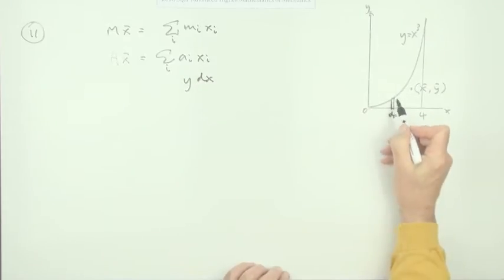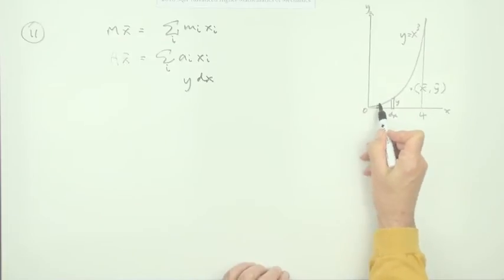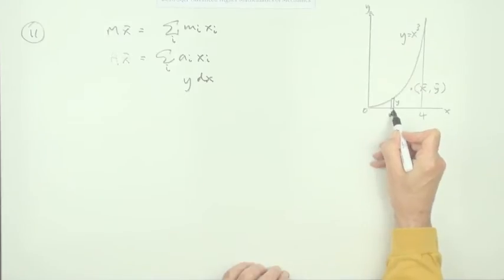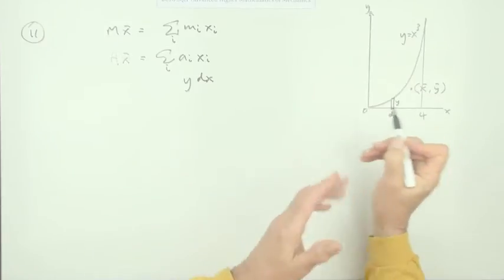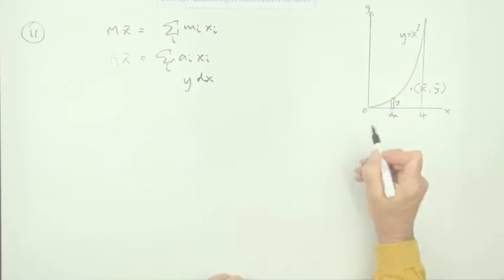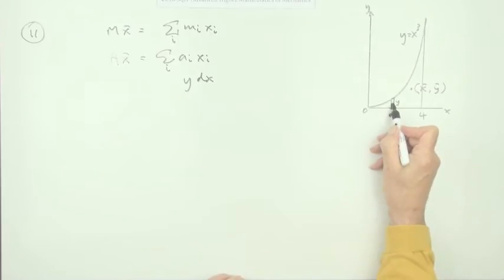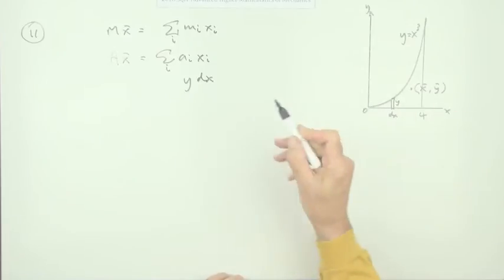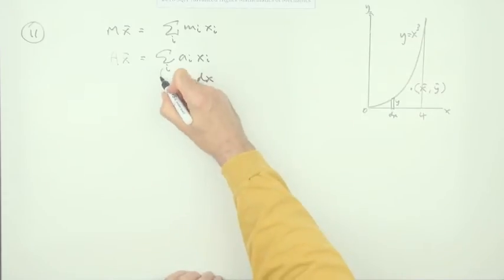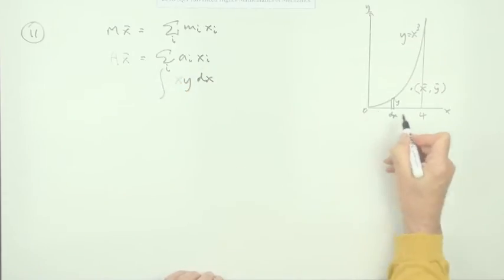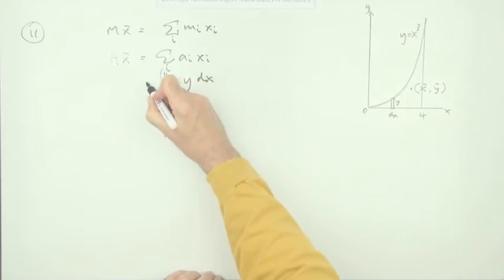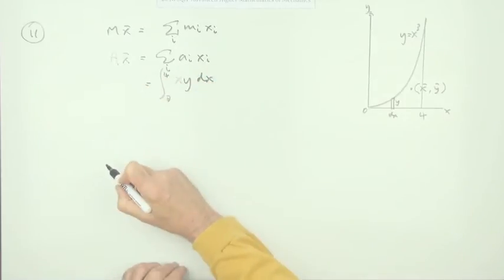And its moment about the y-axis will be the distance to it, which is simply x. It's actually x plus a half of dx, but dx is tending to 0, so that just tends to x. So the moment of that strip about the y-axis will be x y dx. So if you add them all up, starting from 0 and going to 4, that should be the same as the area of the whole thing.